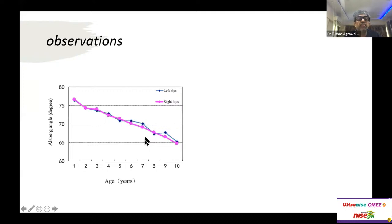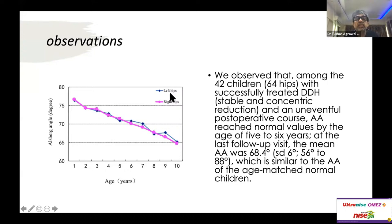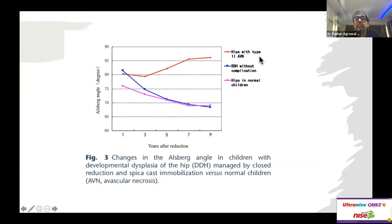In the normative values, the Olsberg angle starts at around 76 degrees in children up to one year and decreases to around 65 degrees by age ten, with no difference between right and left. In DDH hips with milder AVN grades 1 and 2, the angle follows a trajectory similar to normal children — starting slightly higher at 83–84 degrees and coming down to approximately 68 degrees by age ten.